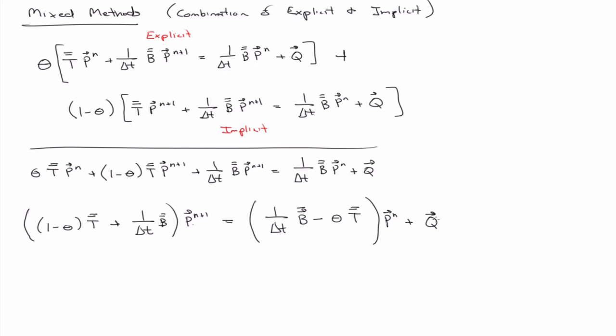So, the reason we would do it, and by the way, if we use theta equals 1 half, this is called the Crank-Nicholson method. And so the reason that you do it is because it's more accurate in time. Remember, both the implicit and the explicit were only first-order accurate in time. The error was proportional to delta T. The Crank-Nicholson method actually has an error that's proportional to delta T squared. And I'll show you that in just a second. So, we won't derive it. I'll just show you that when we review the slides.